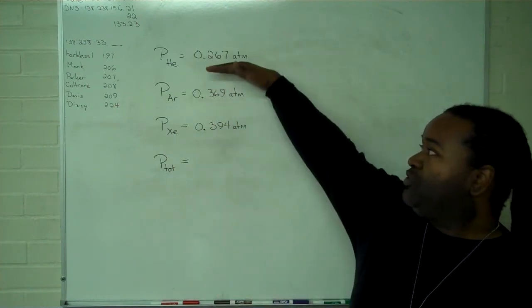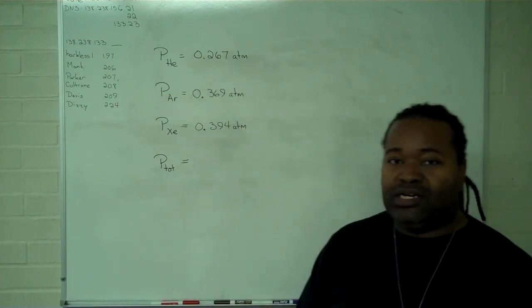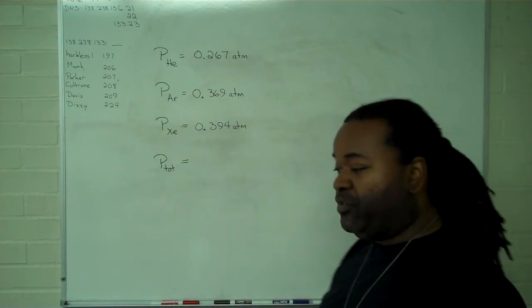In this case, we have a partial pressure for helium, argon, and xenon. The first step, getting the total pressure, is very straightforward.